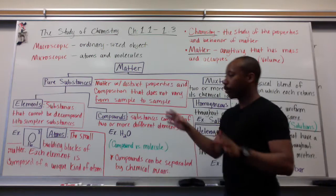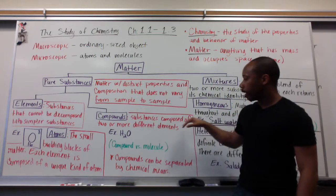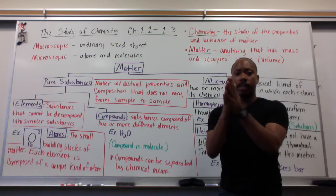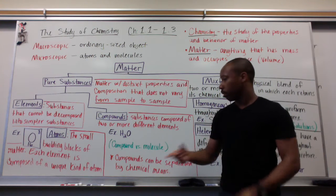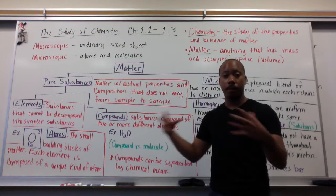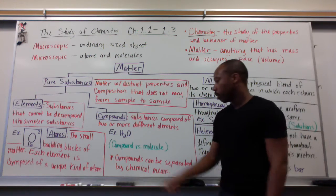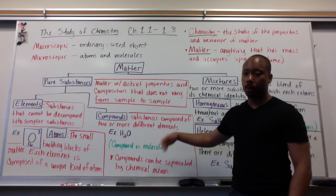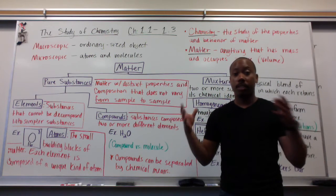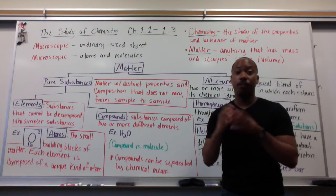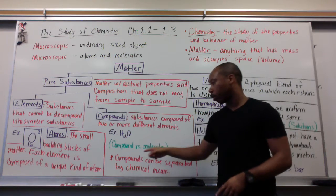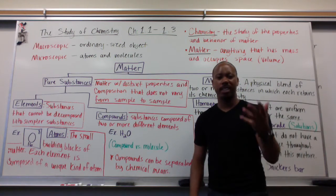The other type of pure substance is a compound. Compounds are substances composed of two or more different atoms — for example, oxygen and hydrogen come together to form H2O. You'll also hear the term molecule thrown around: a molecule is simply when two atoms, the same or not the same, come together. Two or more non-metals coming together is a molecule. All compounds are molecules, but not all molecules are compounds.